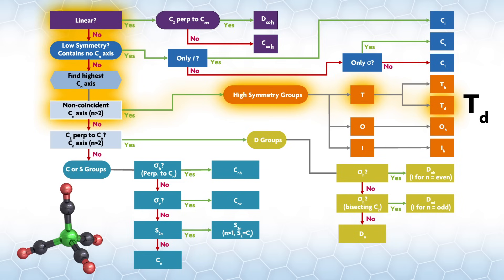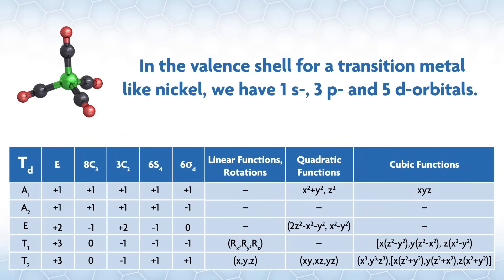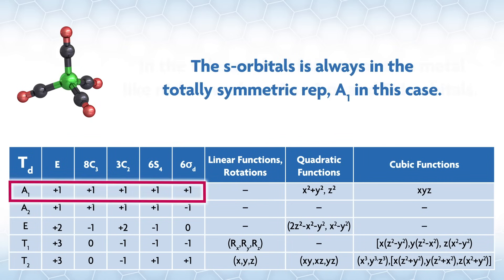The Td character table looks like this. In the valence shell for a transition metal like nickel, we have 1s, 3p, and 5d orbitals. The 1s orbital is always in the totally symmetric rep, A1 in this case.